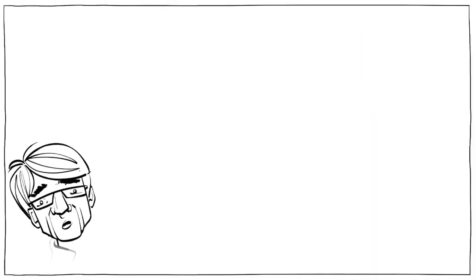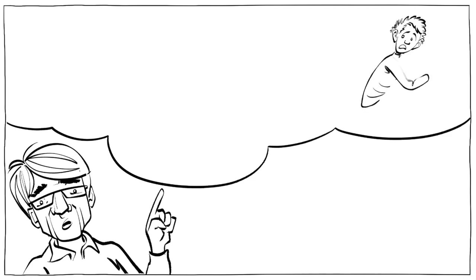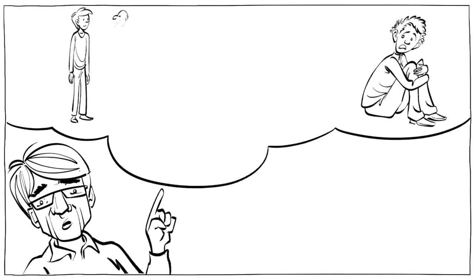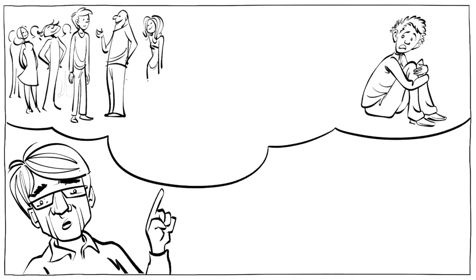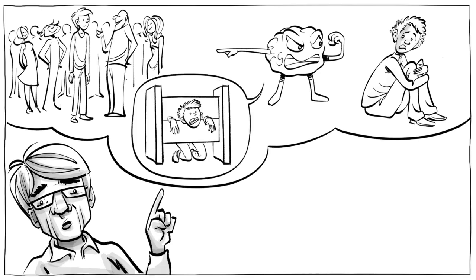All violence, Rosenberg wrote, is the result of people tricking themselves into believing that their pain derives from other people and that consequently those people deserve to be punished.